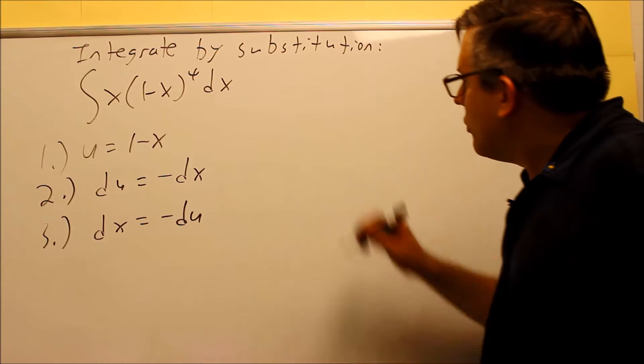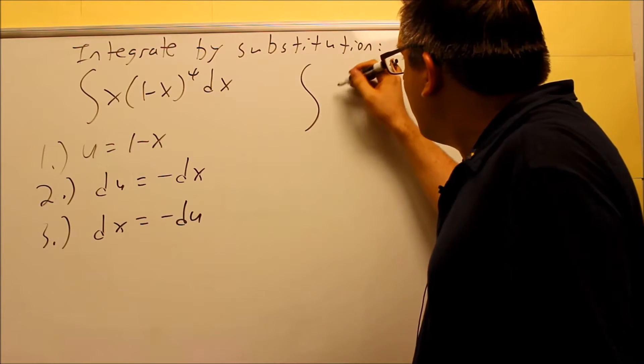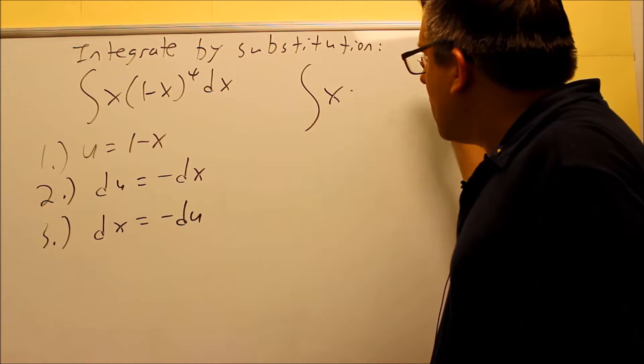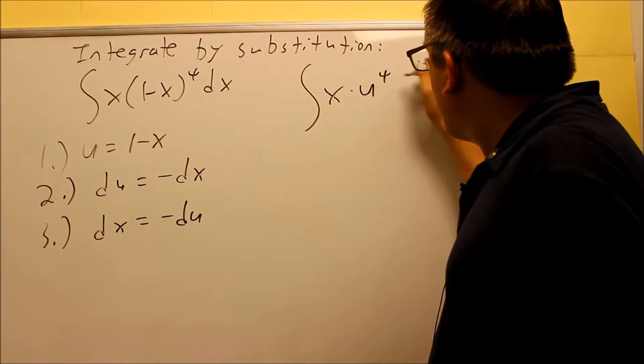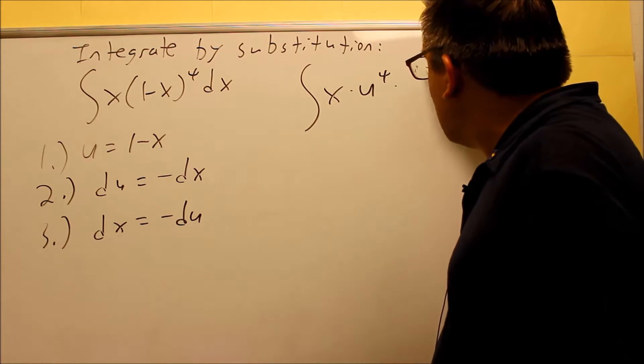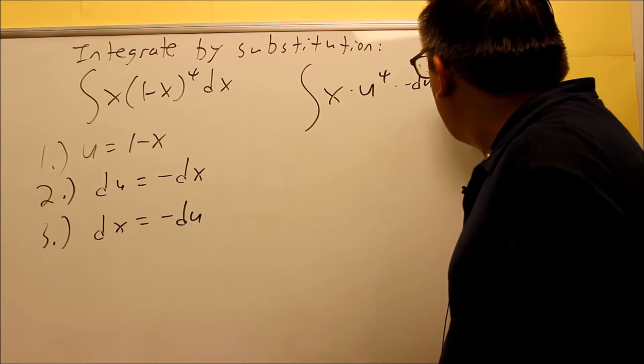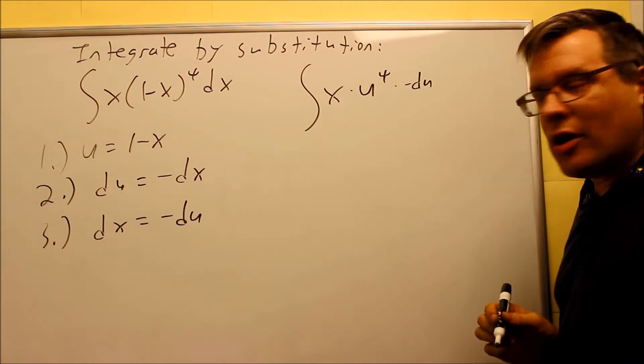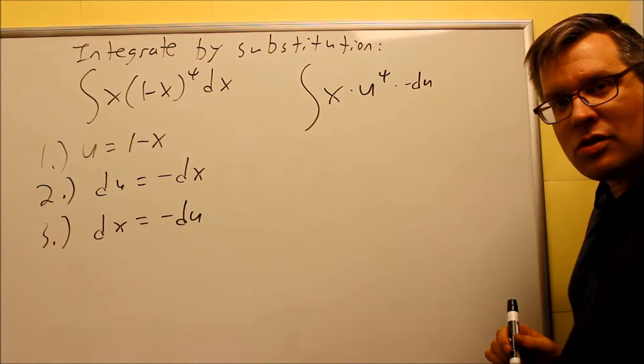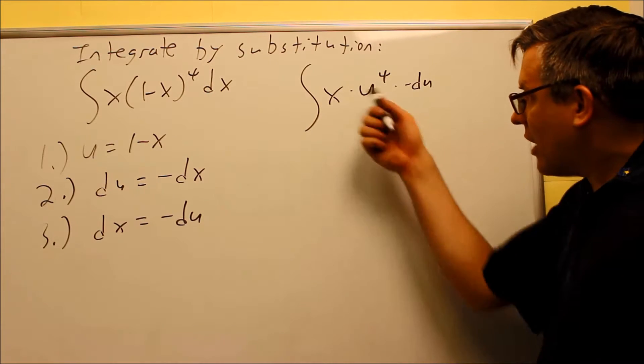So we would put this back into the original one. You would have X right here by itself, and you have U to the fourth power, and then you have times a negative DU. Okay, so here's the problem right there. The problem is, we've still got an X that's left over, and we can't cancel it.